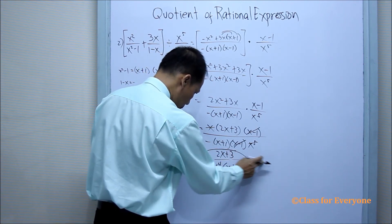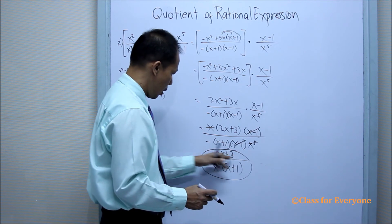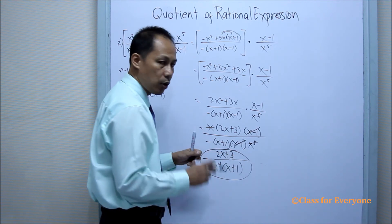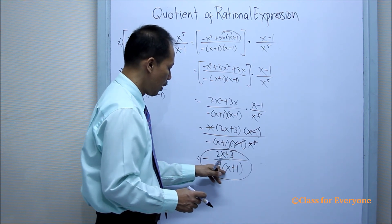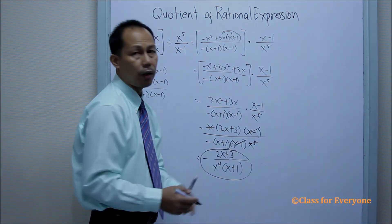Our answer will be 2x plus 3, minus negative... Sorry, our answer will be negative 2x plus 3 all over x to the fourth times x plus 1.